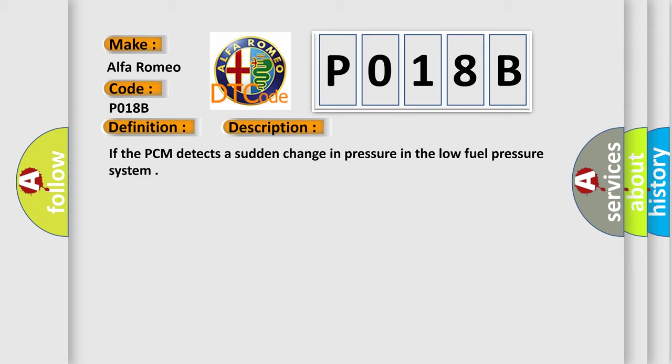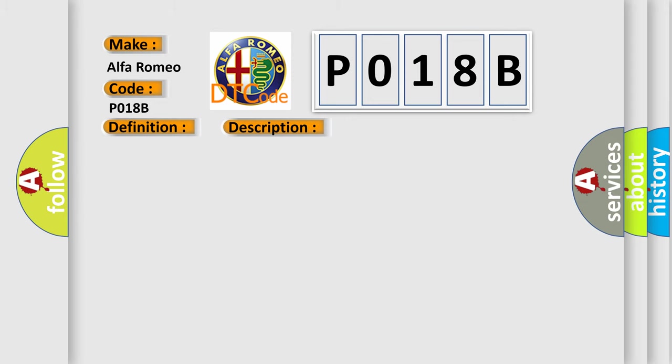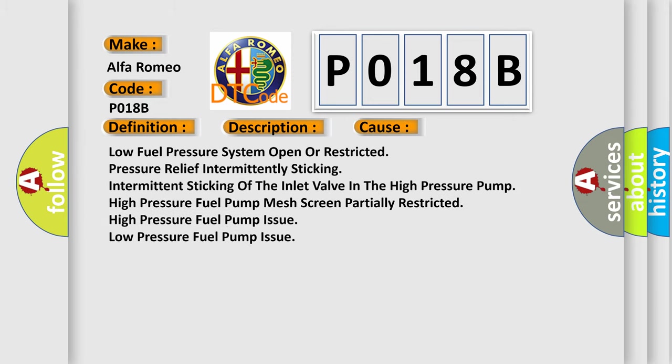If the PCM detects a sudden change in pressure in the low fuel pressure system, this diagnostic error occurs. It most often occurs in these cases: low fuel pressure system open or restricted pressure relief, intermittent sticking of the inlet valve in the high pressure pump, high pressure fuel pump mesh screen partially restricted, high pressure fuel pump issue, or low pressure fuel pump issue.